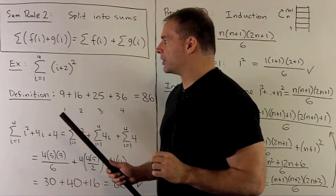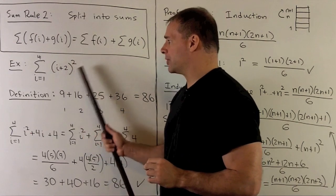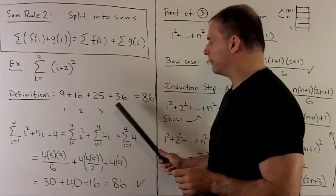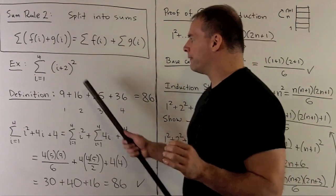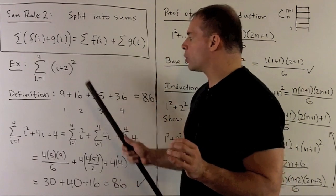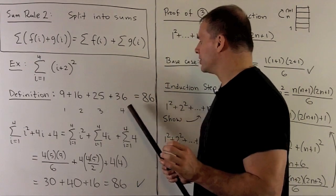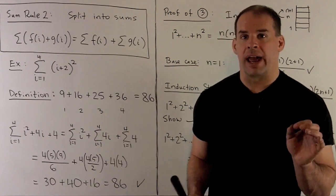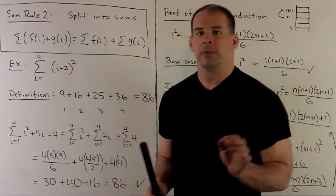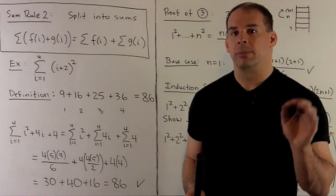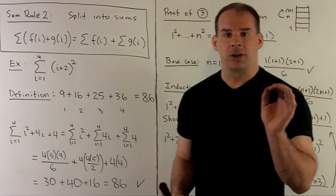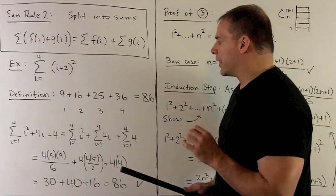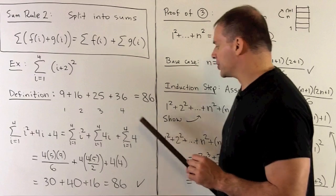Let's look at a concrete example: the sum as i goes from 1 to 4 of i plus 2 squared. By our definition, the range goes from 1 to 4. We put each number into the function i plus 2 squared, getting 3 squared, 4 squared, 5 squared, and 6 squared. Adding those up gives 86. Another way to get the answer: expand i plus 2 squared to get i squared plus 4i plus 4. Using the splitting rule, we separate this into three summations: the sum on i squared, a sum on 4i, and a sum on 4.